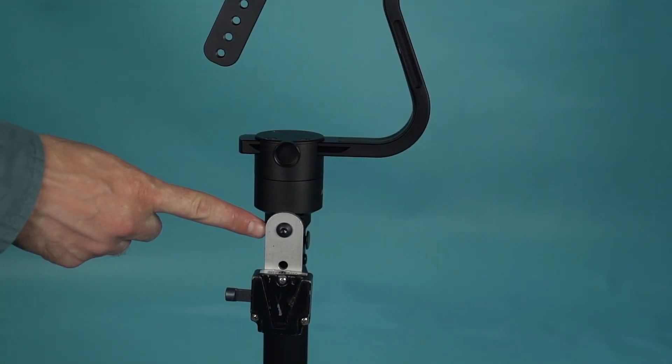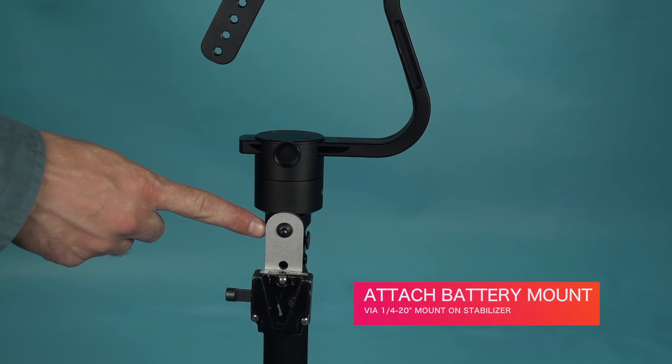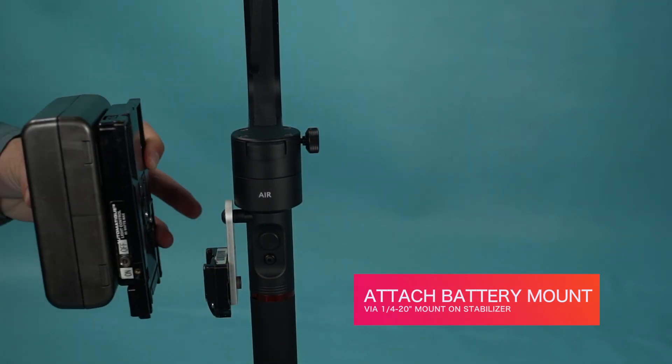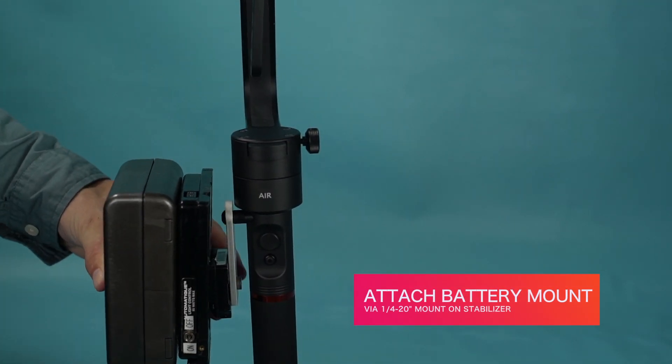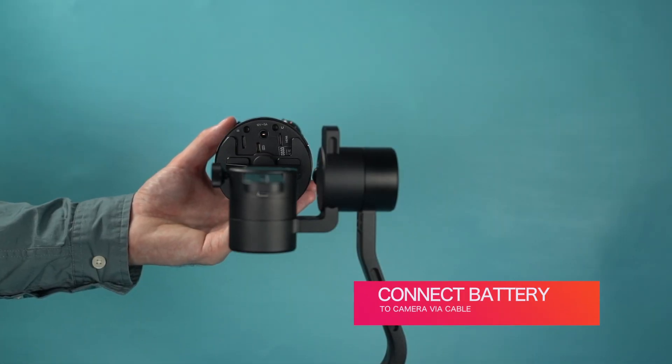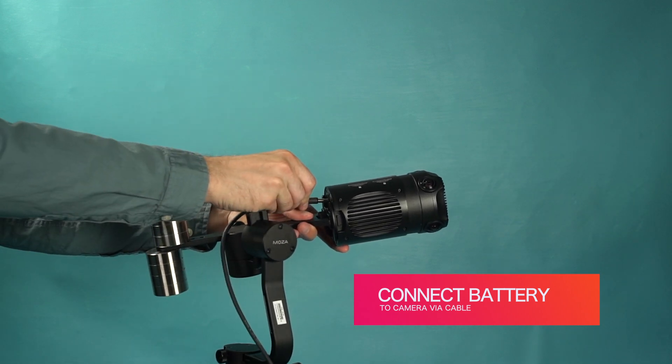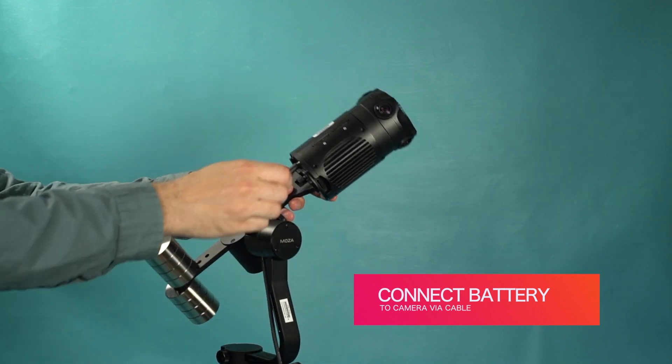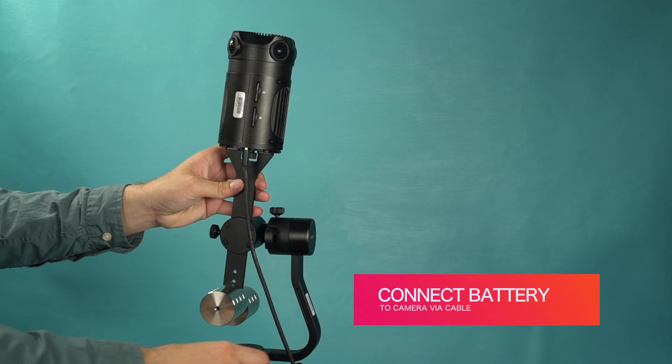For this setup, the camera's externally powered. Attached to the 1/4 inch mount on the 360 Air's handle is a quick release system for a battery, which will externally power the camera. The GURU 360's camera mount allows for ease of access to camera connections. Now connect the power cable from the battery to the camera.